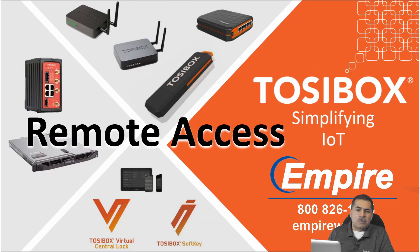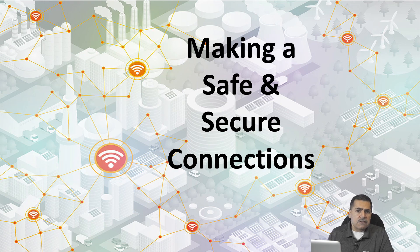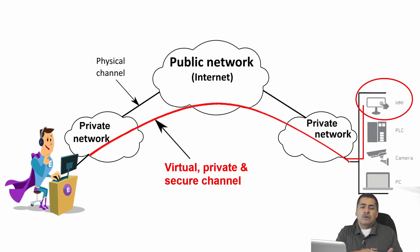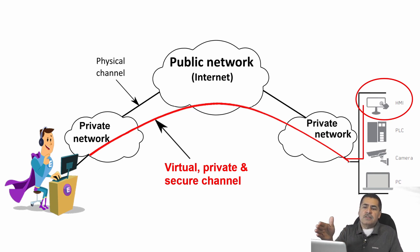Today we're going to be talking about remote access and making safe and secure connections. Down in the lower left hand corner here you can see our Empire automation guy — his superpower is connecting to remote sites safe and secure. He's using a virtual private secure channel, which you can think of as his private little channel to connect to that HMI on the other side at a remote site.